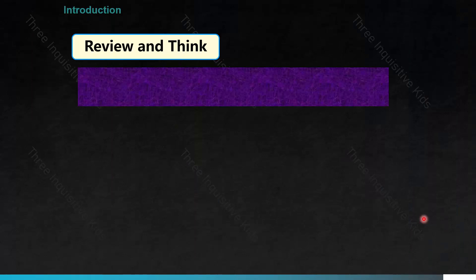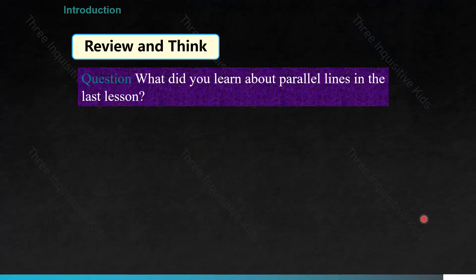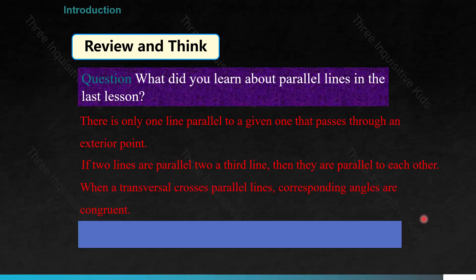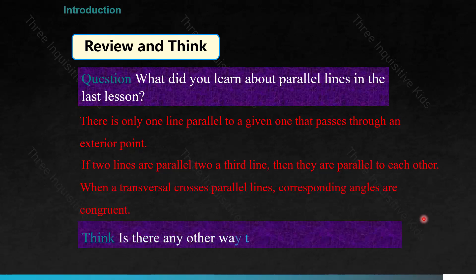Review and think: what did you learn about parallel lines in the last lesson? We learned that there is only one line parallel to a given one that passes through an exterior point. We also learned that if two lines are parallel to a third line, then they are parallel to each other. And when a transversal crosses parallel lines, corresponding angles are congruent.